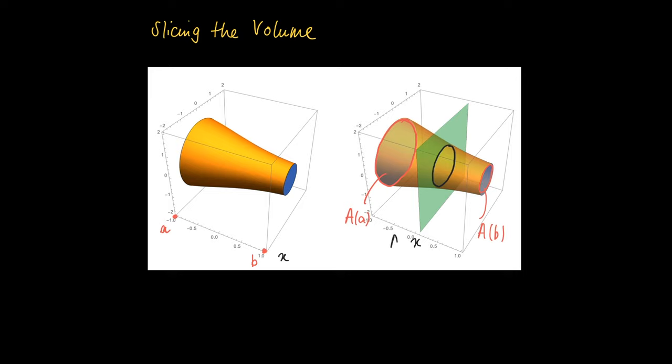And well, the green plane is the fixed value x, and we may vary the y and z coordinates. The intersection of this plane with the solid gives rise to the intersecting piece which has surface area A(x).